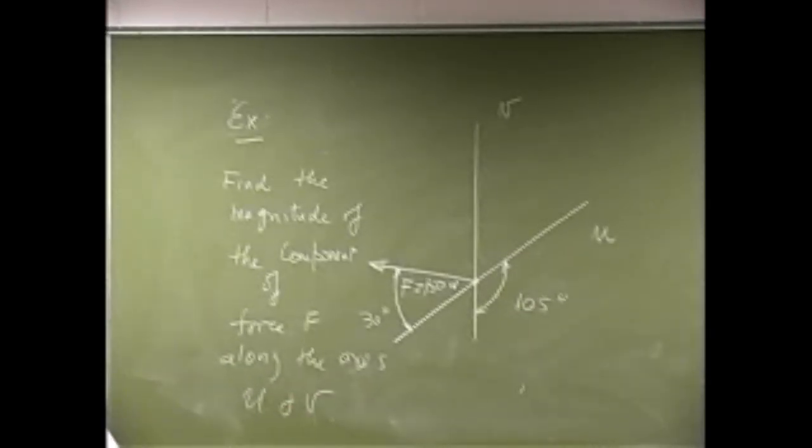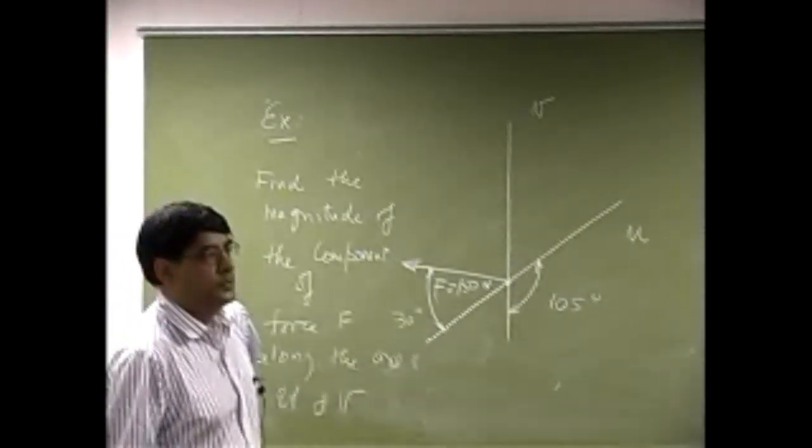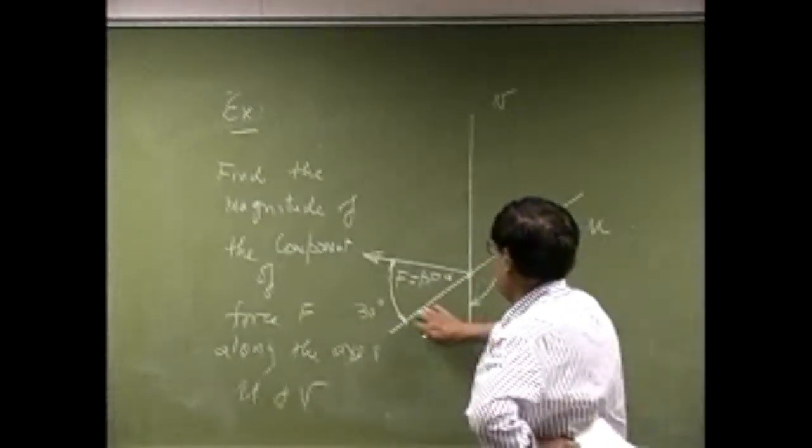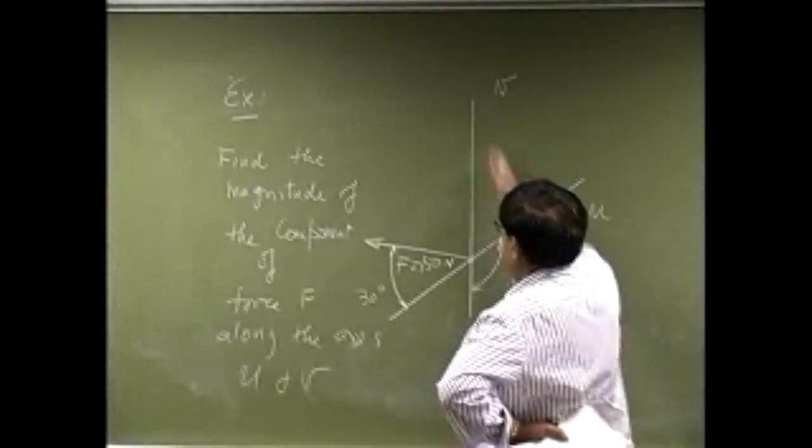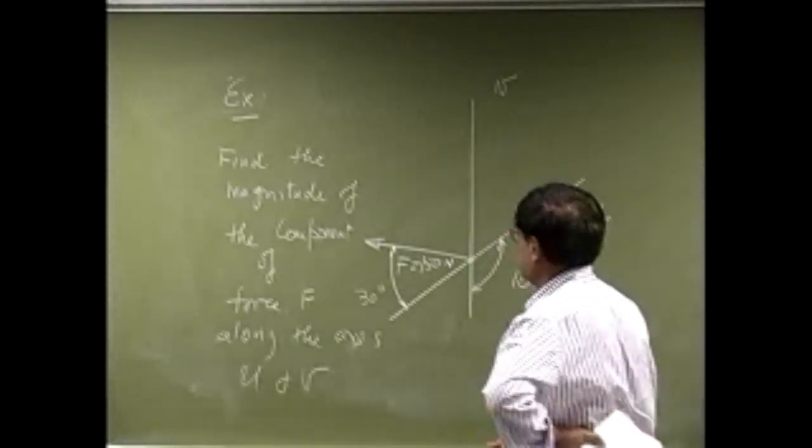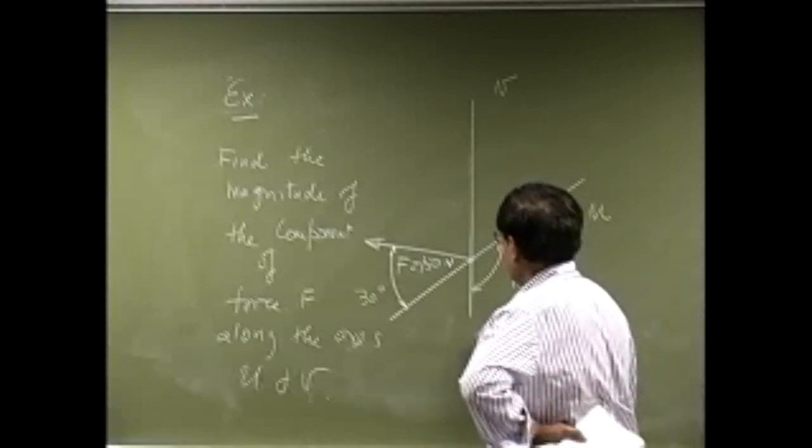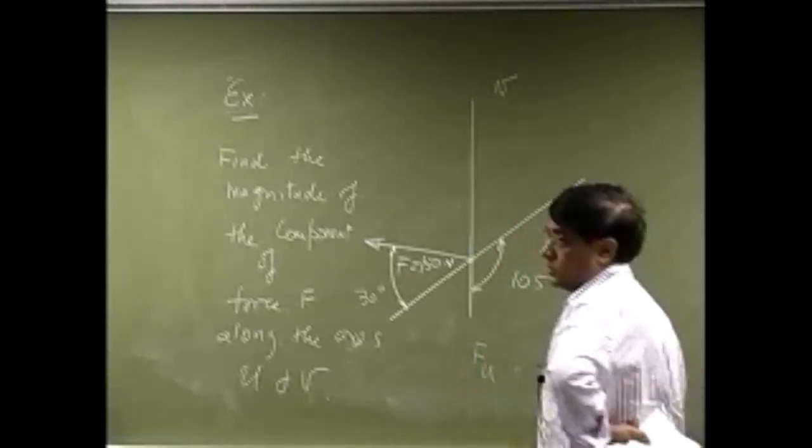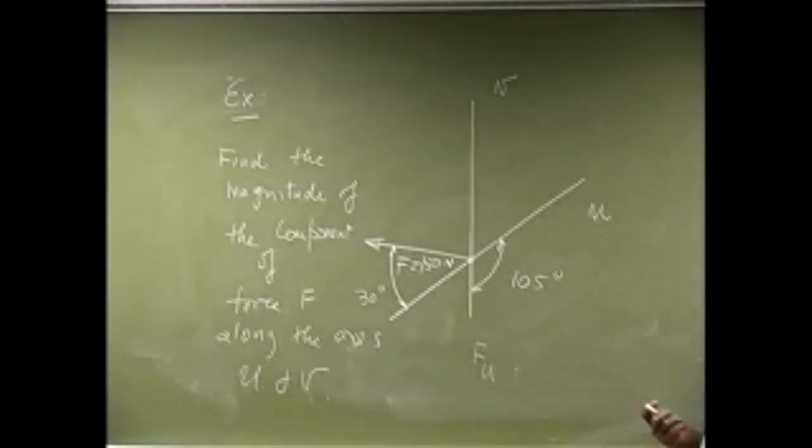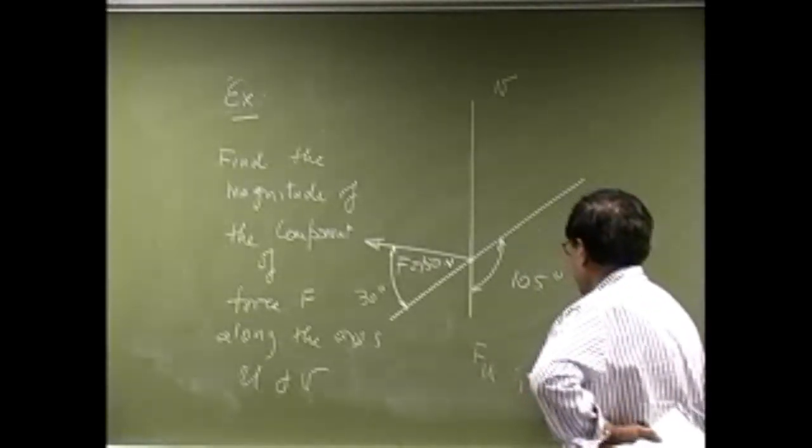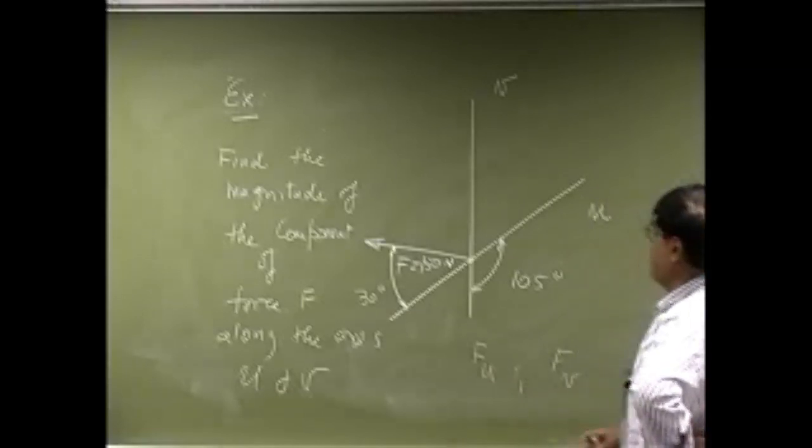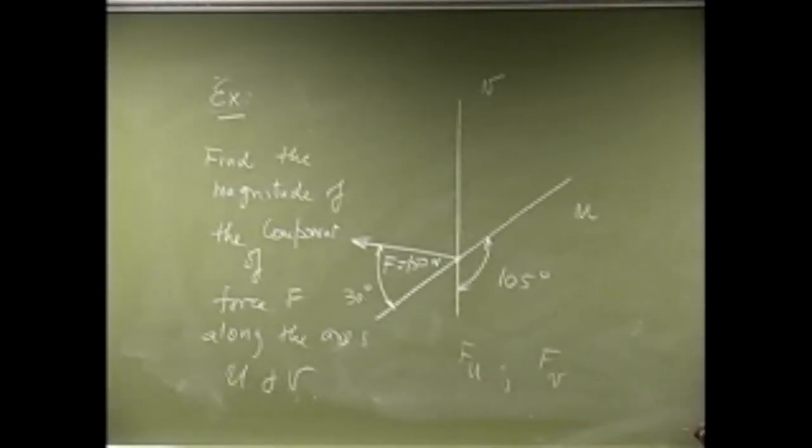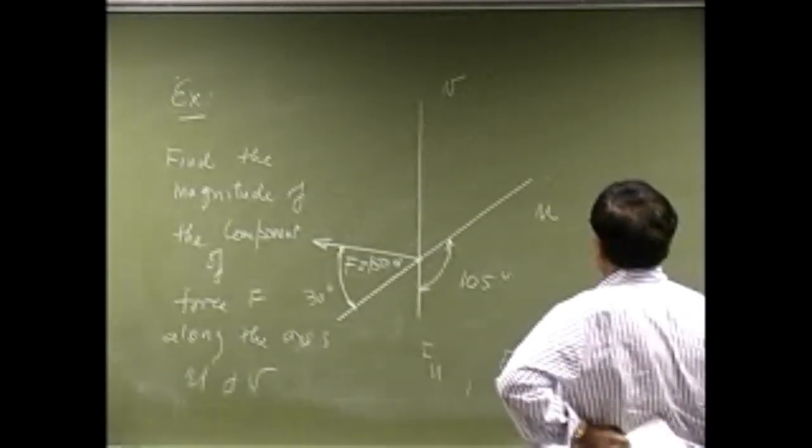We are looking for two components of the same force. These components are going to be along this direction as well as along this direction. So you're going to have two components: one is F sub u, the component in the direction of u, and another component F sub v along the v axis.